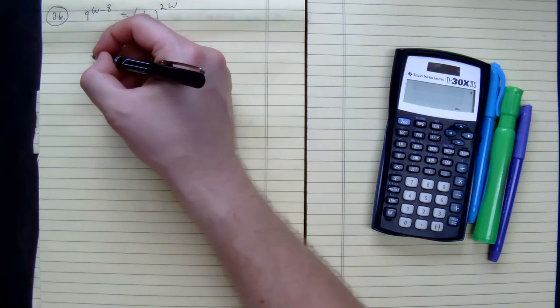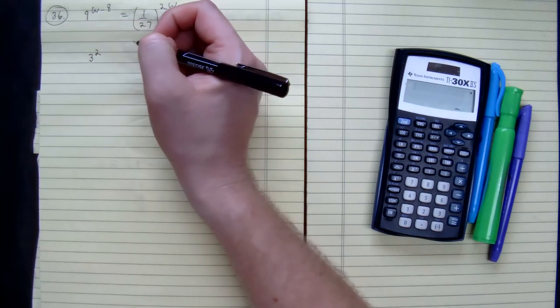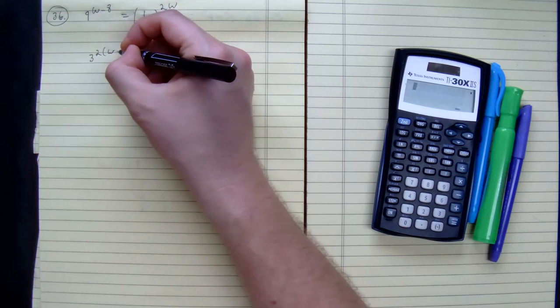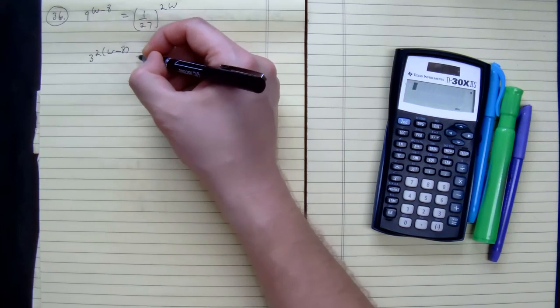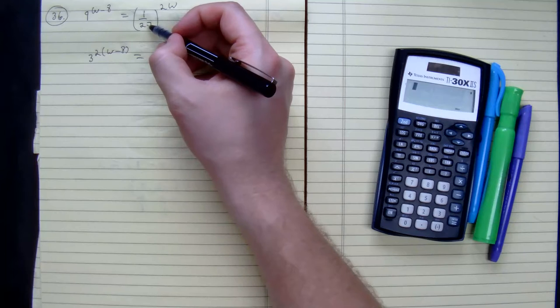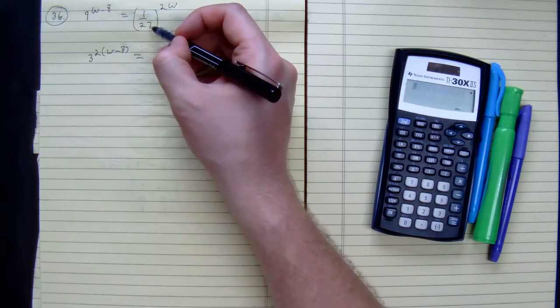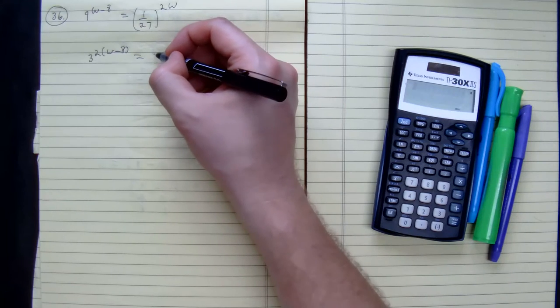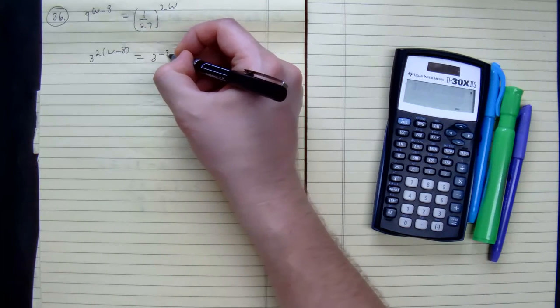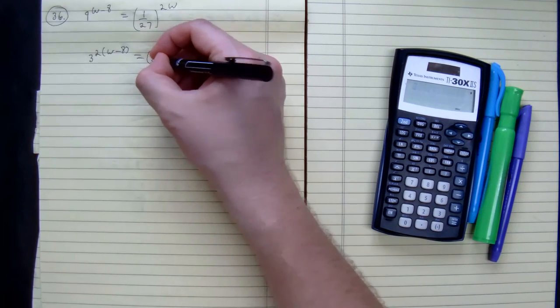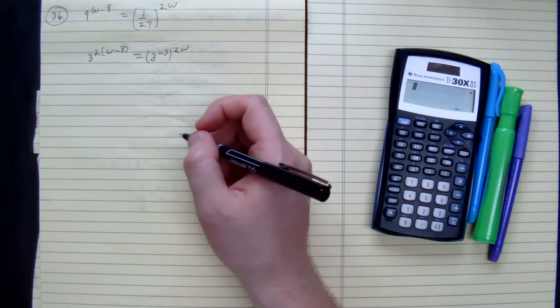Our first one would become 3 to the power of 2, which is the same as 9, times the quantity of w minus 8, which equals 3 to the negative 3, times 2w.